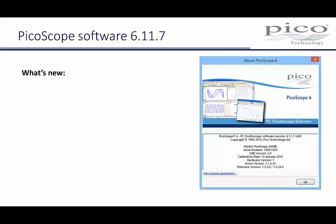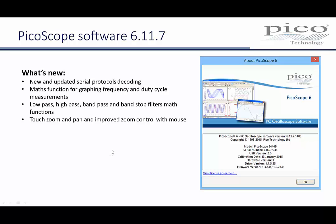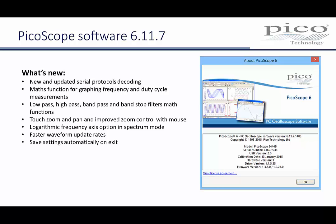In this version of PicoScope, we have made a number of improvements, starting with the range and number of serial protocol decoders that are included as standard. There are new math functions for graphing frequency and duty cycle measurements. New waveform filters can be applied to simulate the frequency response of missing circuit elements. Mouse control of waveform zooming has been improved, together with better touch screen support. Logarithmic frequency axis has been added as an option to the FFT spectrum mode. Waveform update rates have been accelerated by optimisation of the core PicoScope FPGA code. And an often requested feature to save instrument settings on exit has been added, together with a number of stability improvements and some bug fixes.